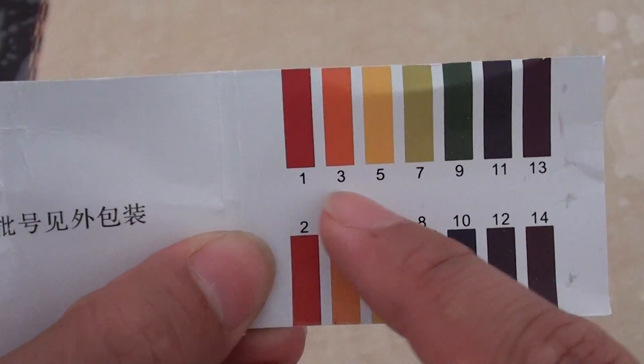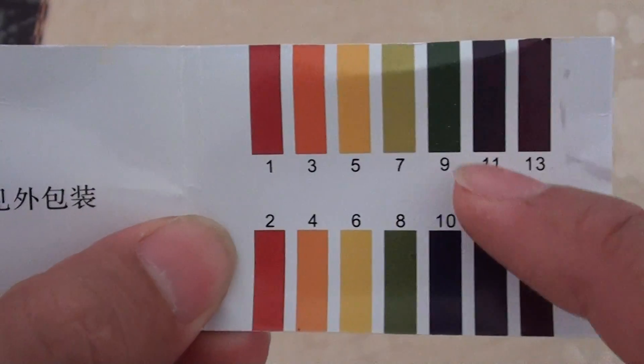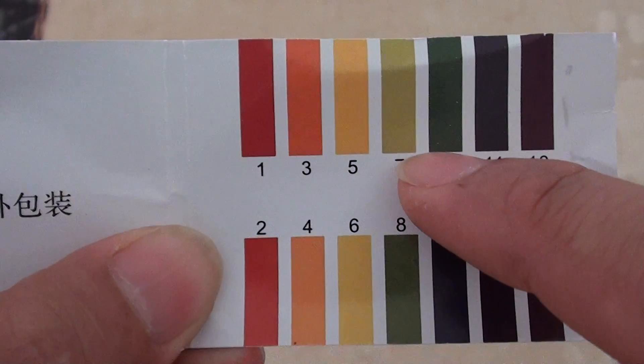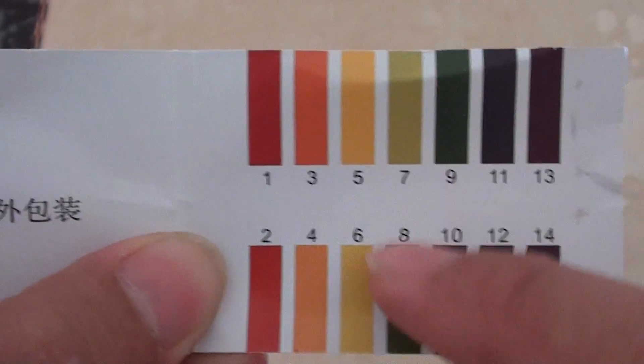So this chart here is ranging from 1 to 14. And ideally, if you want to have a really alkaline body, it should be between 7, 8 and 9. So it should be within this range here.